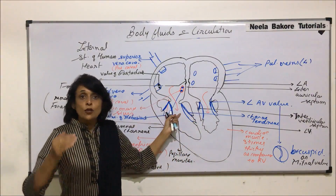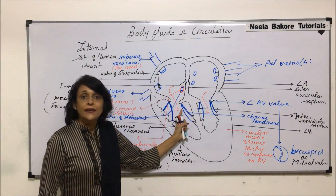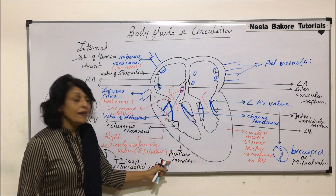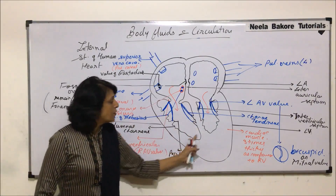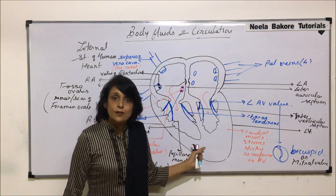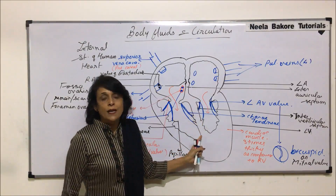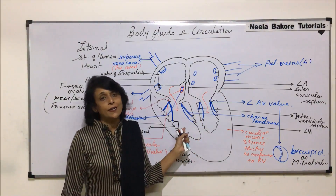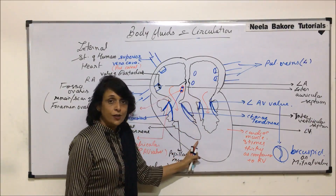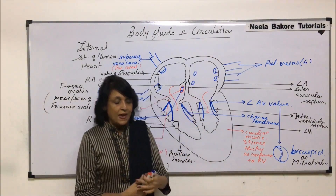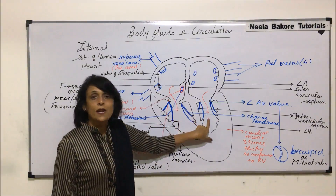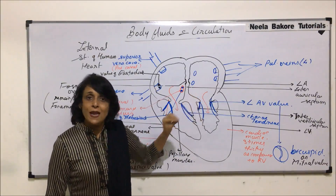The chordae tendineae are attached to the base of the cusps, and at the other end to the papillary muscles — the taller ridge-like structures on the ventricular wall. The interventricular septum is completely formed, providing complete separation of oxygenated and deoxygenated blood. It is slightly oblique, not a straight partition — it is slightly towards the left side.